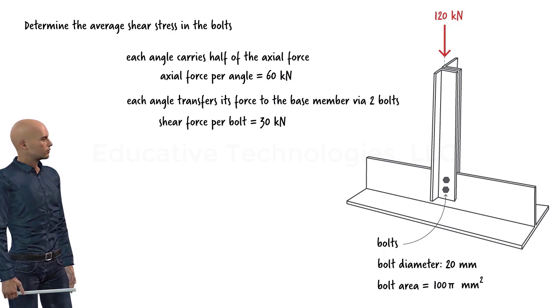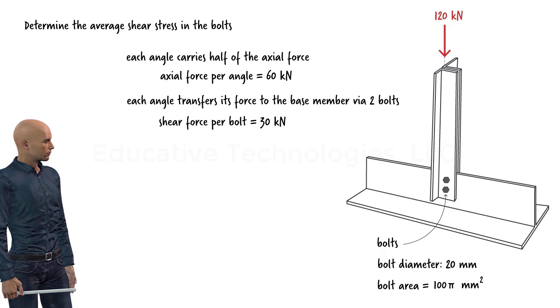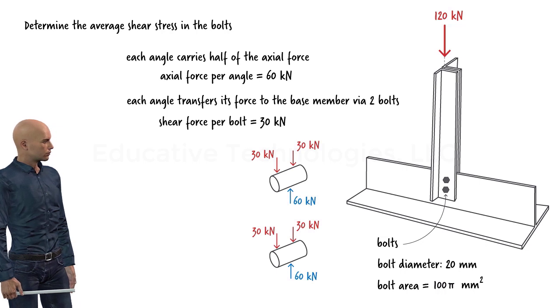This assumption can be made based on the realization that the bolts are placed in close proximity of each other, which enables us to view the entire connection as a single mechanism for force transfer. The shear force per bolt, therefore, equals 30 kilonewtons.